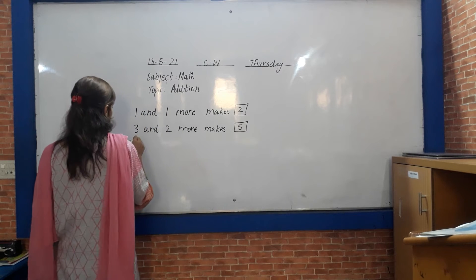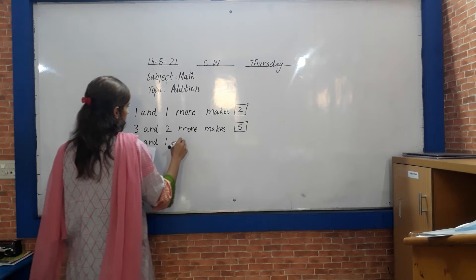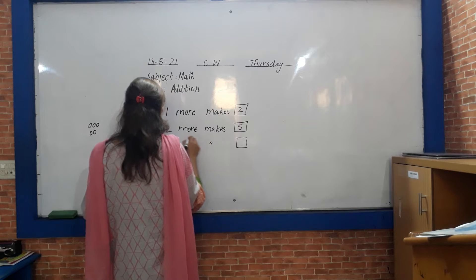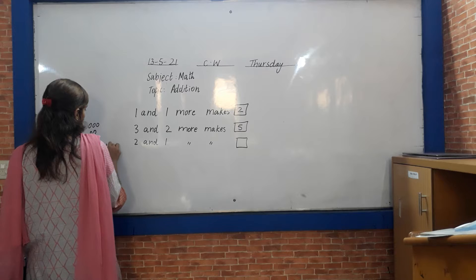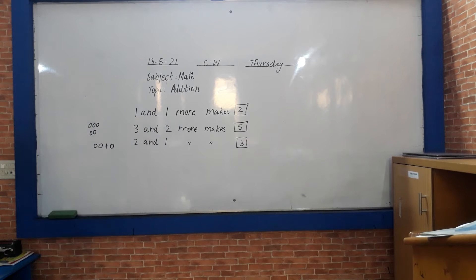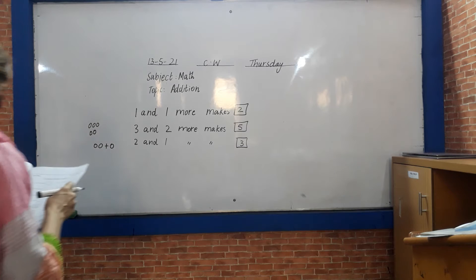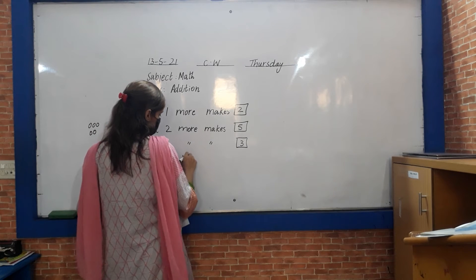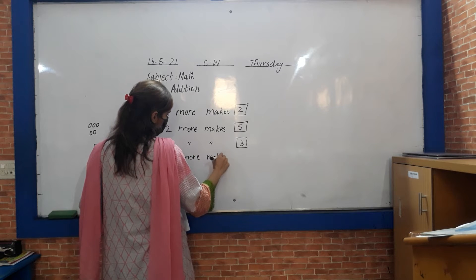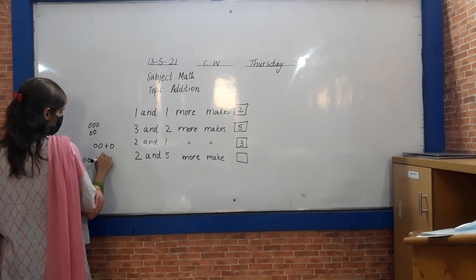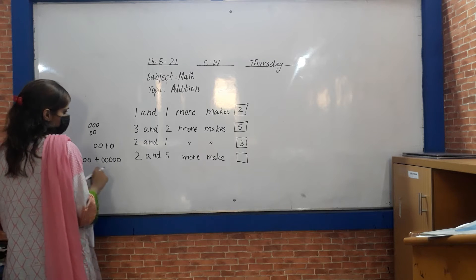Two and one more makes three. One, two, three. Count how many? Two and five more. Three, first count comes in three. At first time one more with three, four, five. It will become seven.